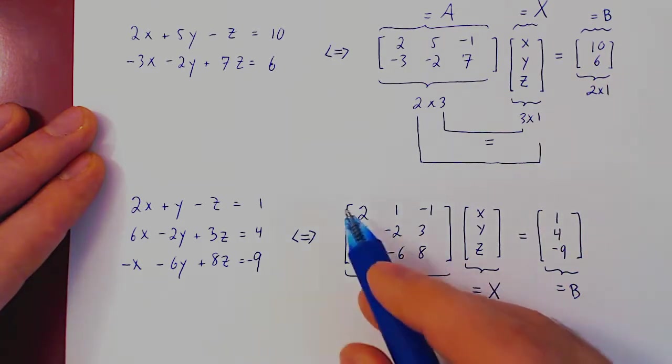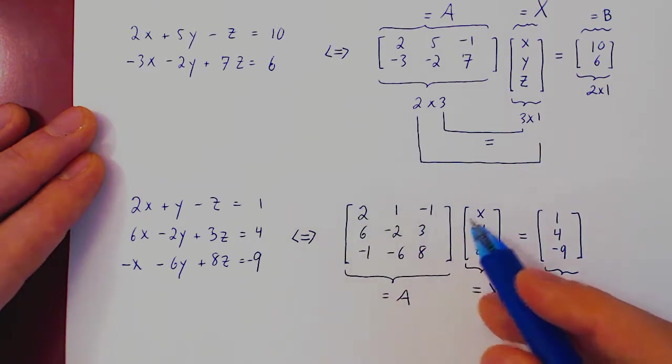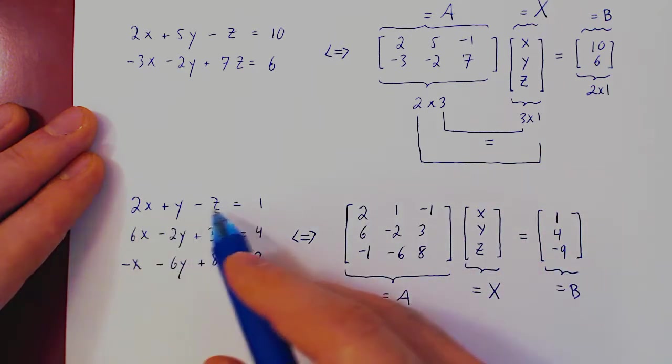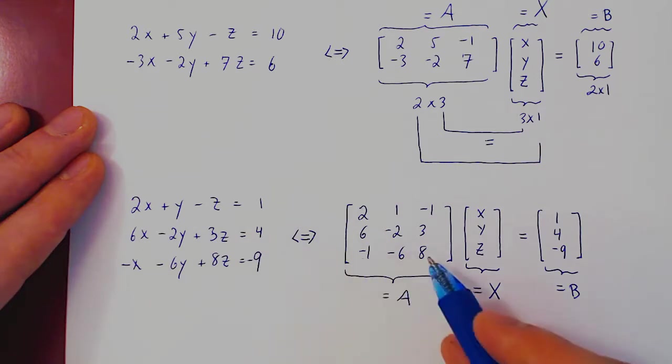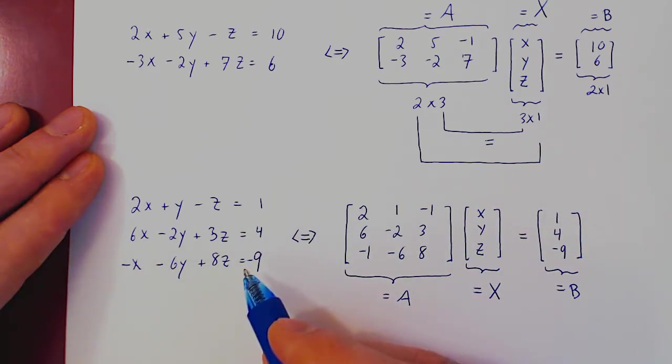And you can check on your own that if you do multiply the first row with the column, you get the first equation. Second row with the column, you get the second equation. And the third row with the column, you get the third equation, which are equal to, respectively, 1, 4, negative 9. And there you go.